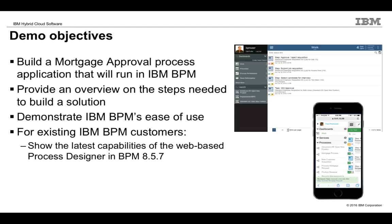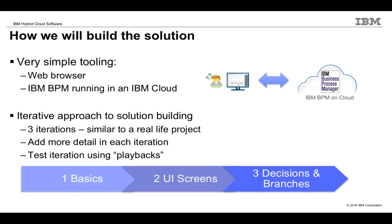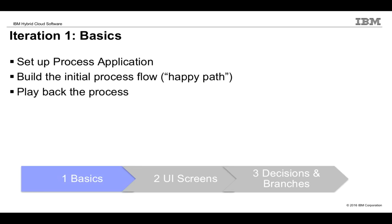We'll build the solution by simply using a web browser connected to BPM running in IBM Cloud. We'll have three iterations similar to a real-life project. In each iteration, we'll add more and more detail and we'll be able to test each iteration by using a concept called playbacks. In iteration one, we'll start with the basics: set up the process application, build the initial process flow — the happy path — and play back the process.